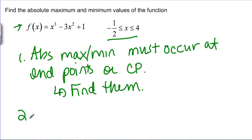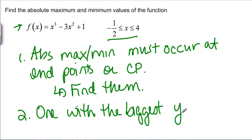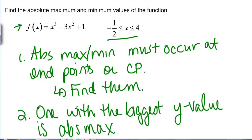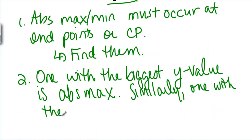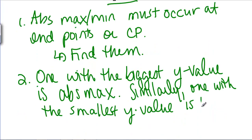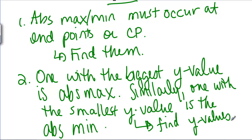Then step two: of these endpoints and critical points, the one with the biggest Y value is the absolute max, and similarly the one with the smallest Y value is the absolute min. So find the Y values.